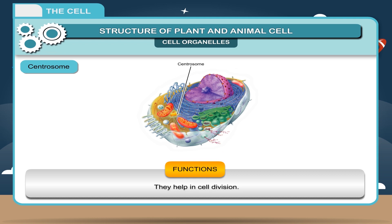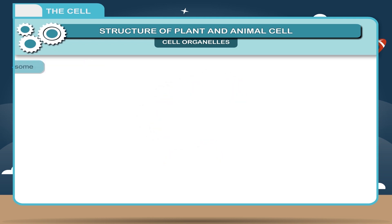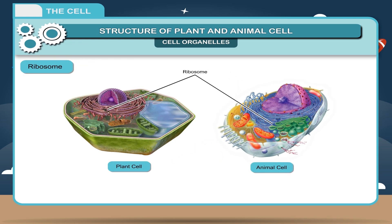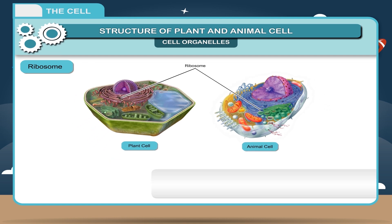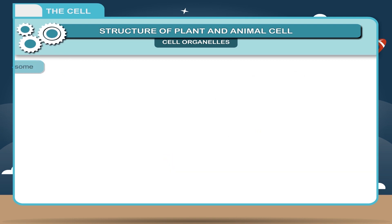Ribosome. The rough surfaced endoplasmic reticulum contains some granular structures which are spherical in shape called ribosomes. Their main function is protein synthesis in the cell.